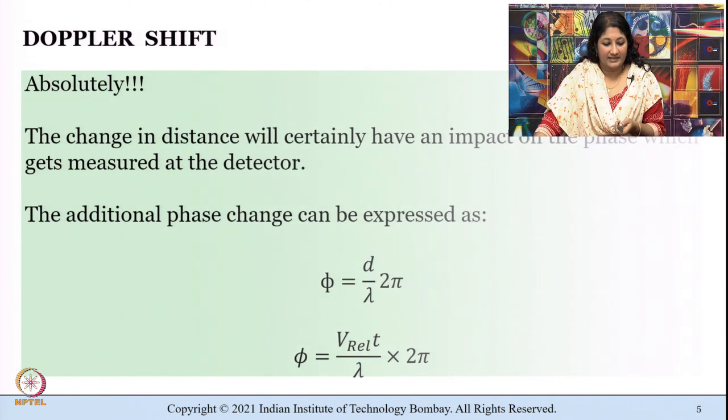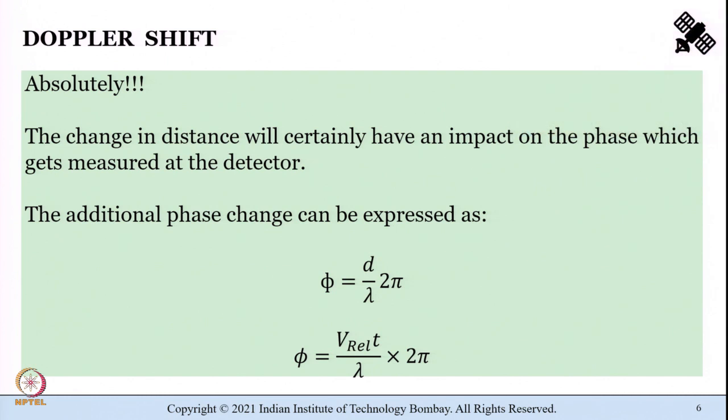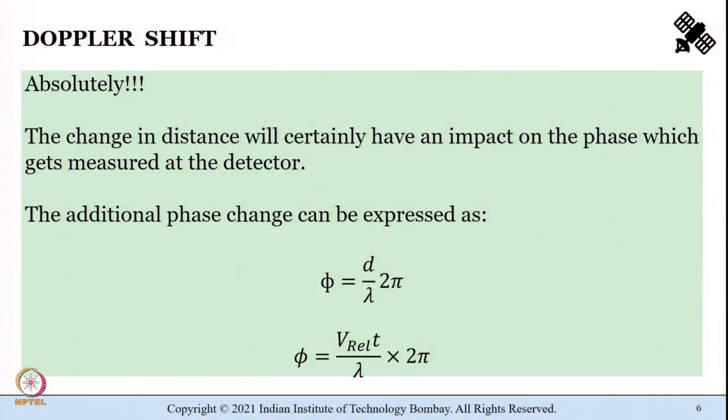Just to reiterate: we are talking about Doppler shift and trying to understand why it is important with respect to synthetic aperture radar images. There will be a change in frequency of return echoes observed from the leading and trailing parts of the footprint as it moves with the platform. The change in distance has an impact on the phase, and we saw the expression to quantify this.